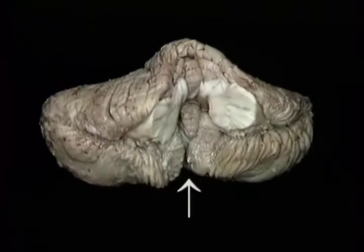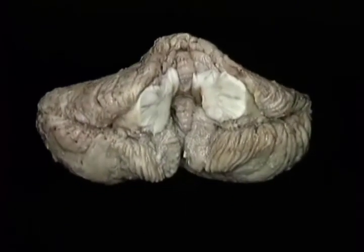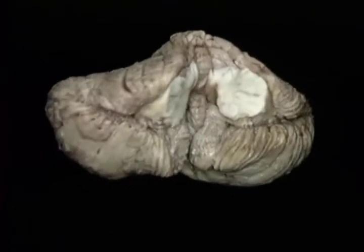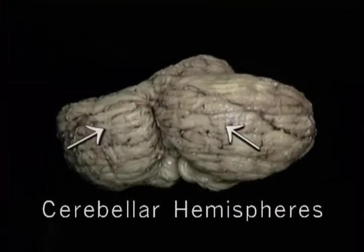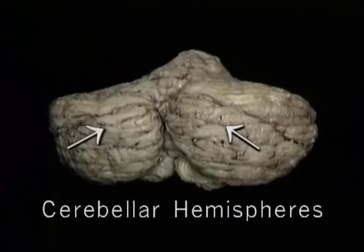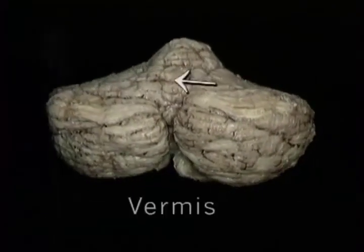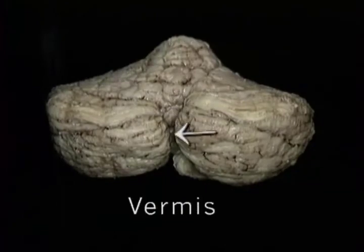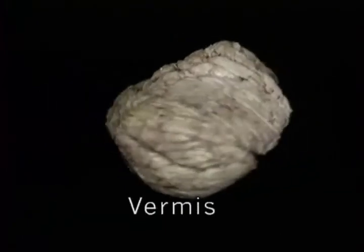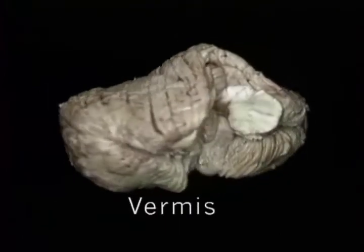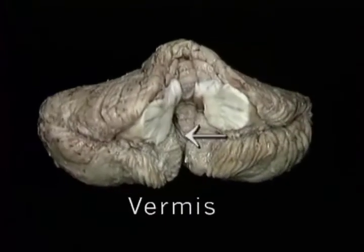A deep groove on the underside partially divides the cerebellum into two hemispheres. These are joined by this midline mass, the vermis, which extends all the way around from the top to the underside.